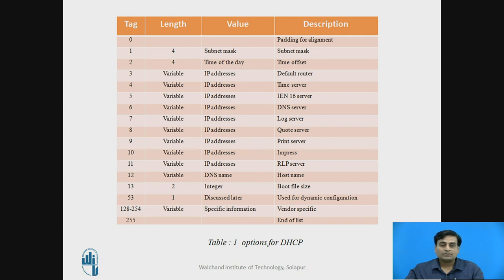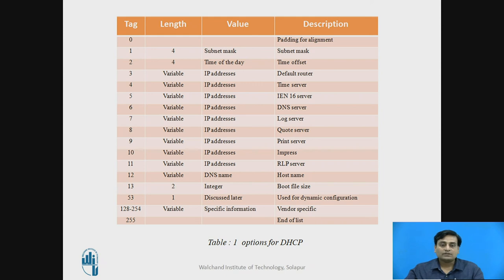Some tag, length, and value field options are tabulated. A tag of 0 is used for padding for alignment purposes and is just one byte long. Tag 255 indicates the end of the option field. Vendors may use tags from 128 up to 254 to supply vendor-specific information. The remaining tags from 1 to 53 are used for different purposes.